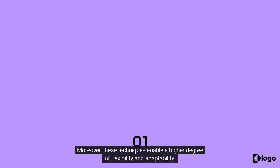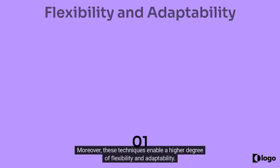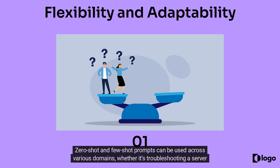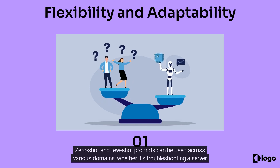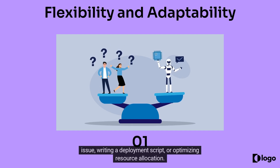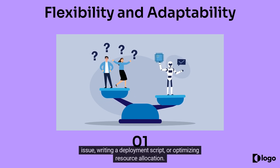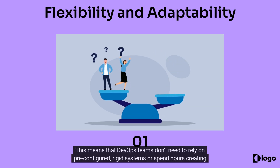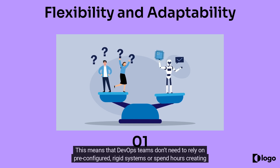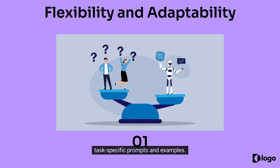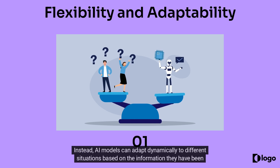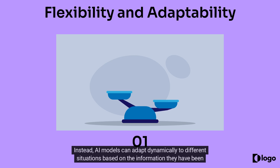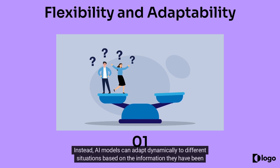Moreover, these techniques enable a higher degree of flexibility and adaptability. Zero-shot and Few-shot prompts can be used across various domains, whether it's troubleshooting a server issue, writing a deployment script, or optimizing resource allocation. This means that DevOps teams don't need to rely on pre-configured, rigid systems or spend hours creating task-specific prompts and examples. Instead, AI models can adapt dynamically to different situations based on the information they have been given.